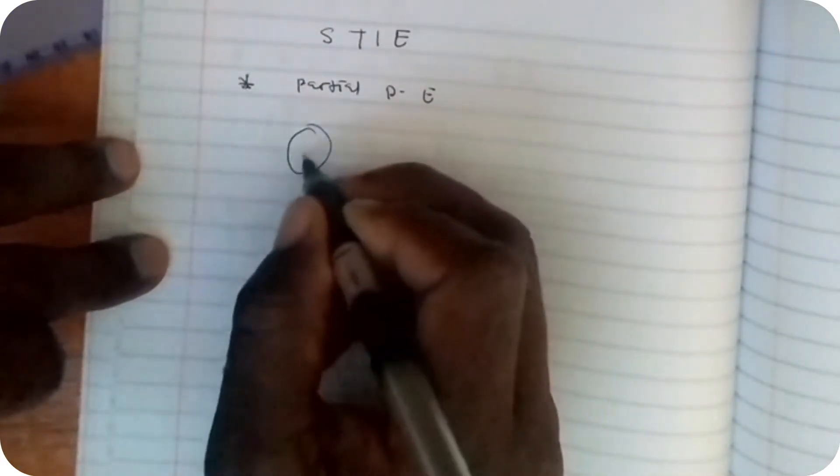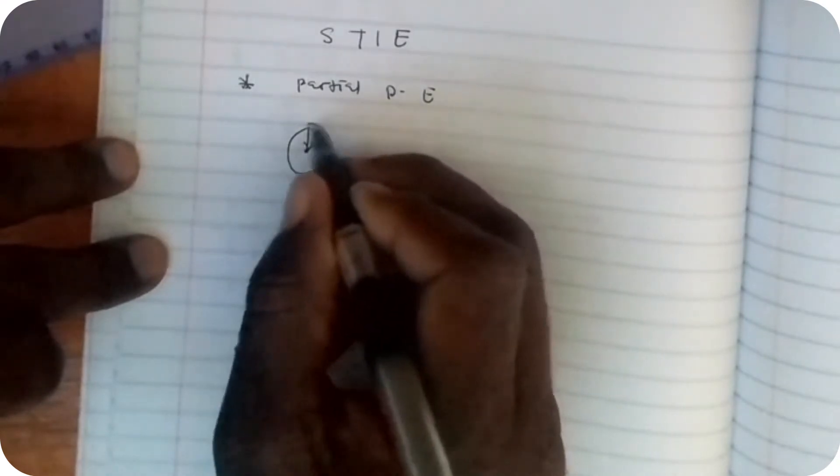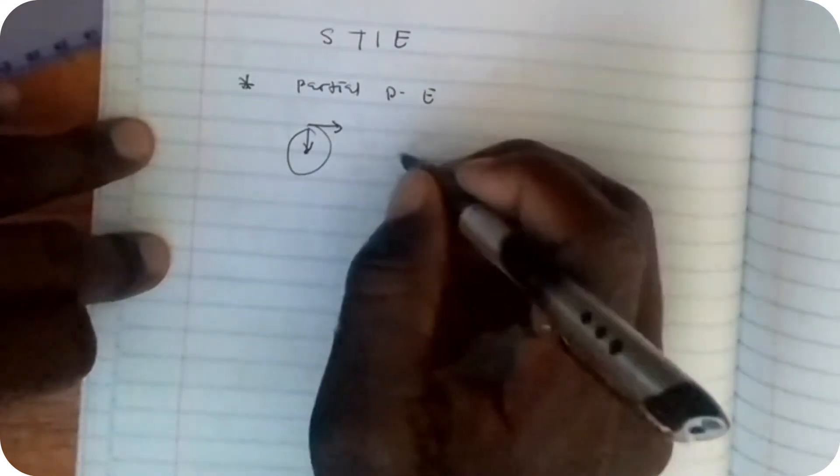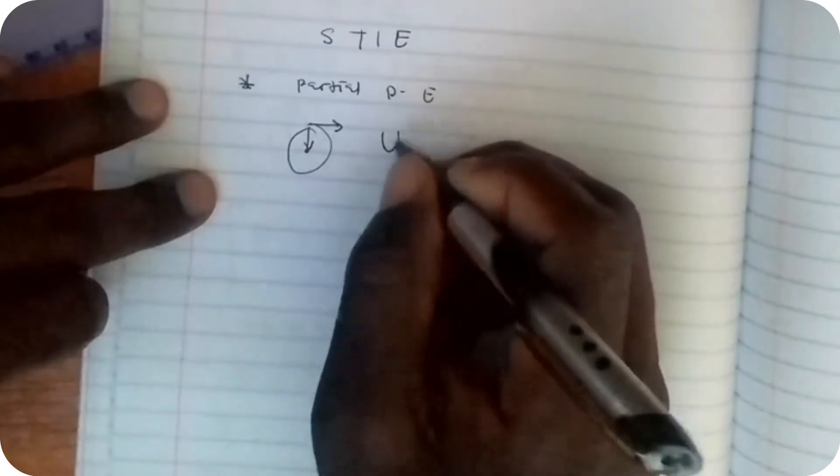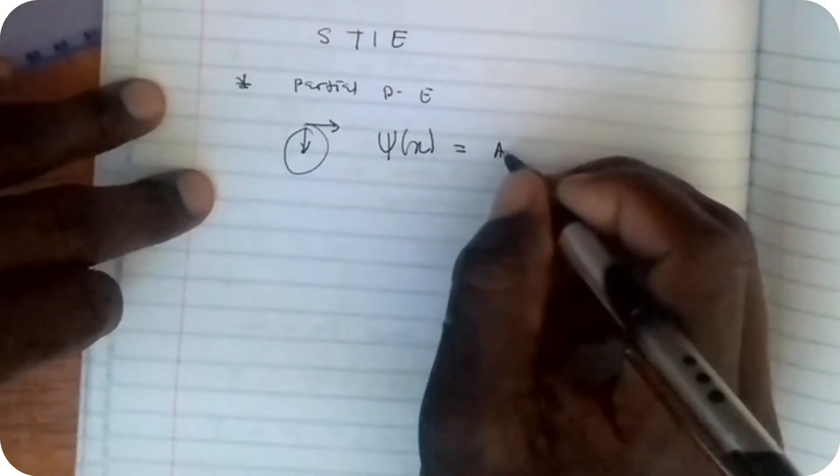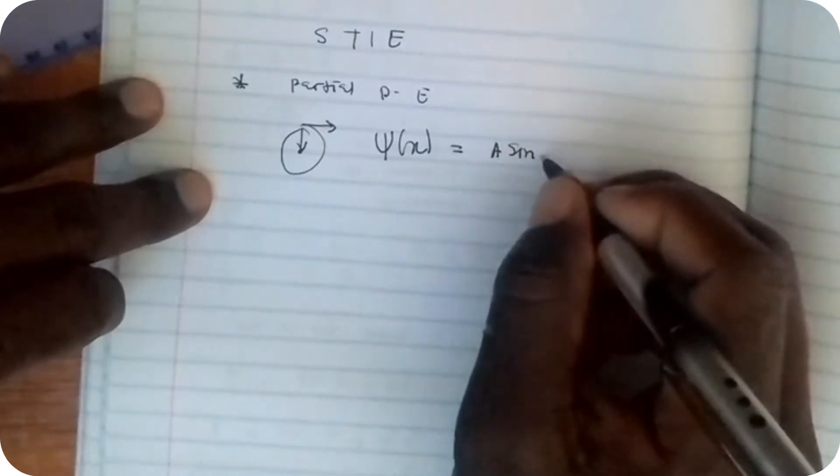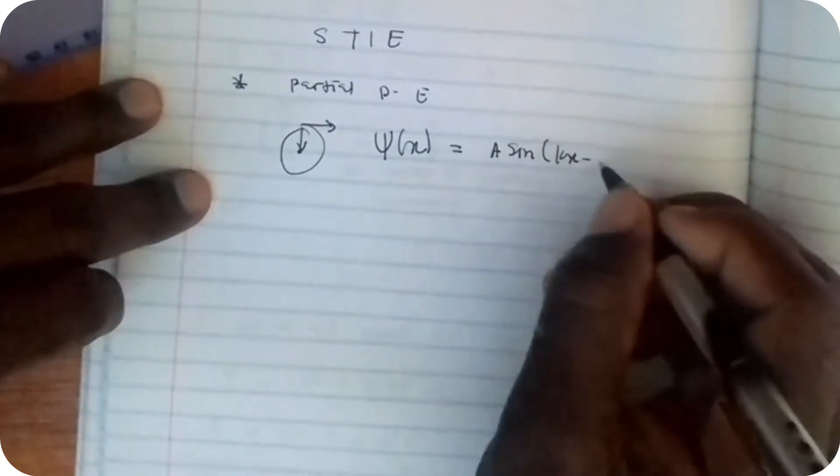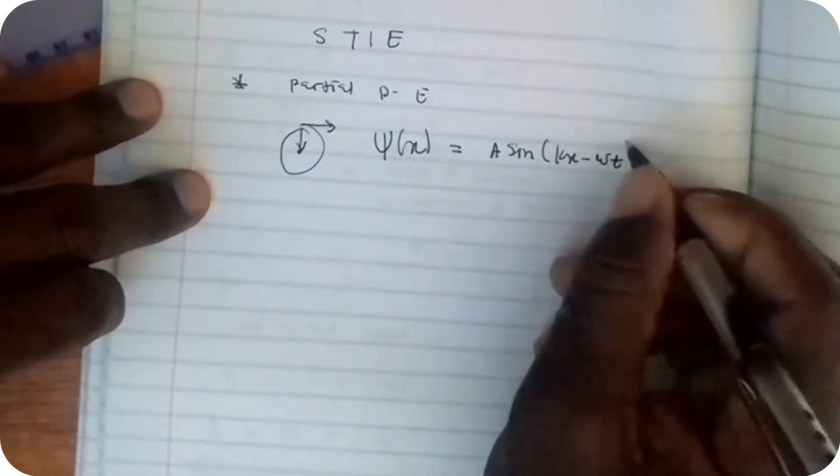Let's consider the electron moving around the nucleus of an atom, with the wave function ψ(x) given as A sin(kx - ωt).